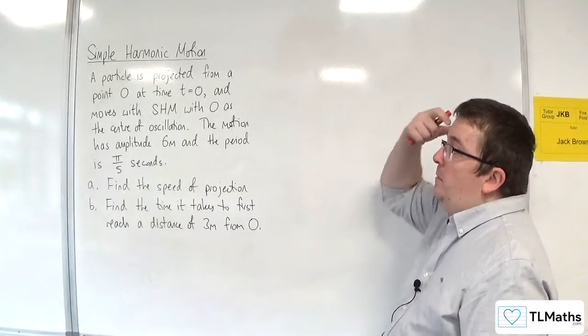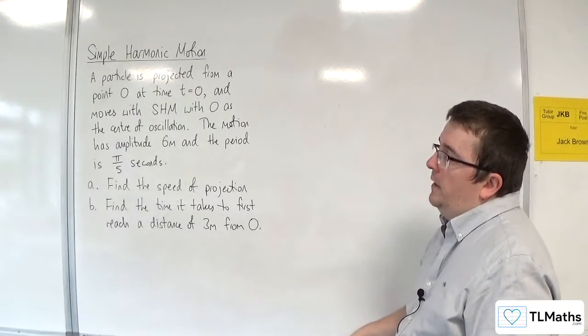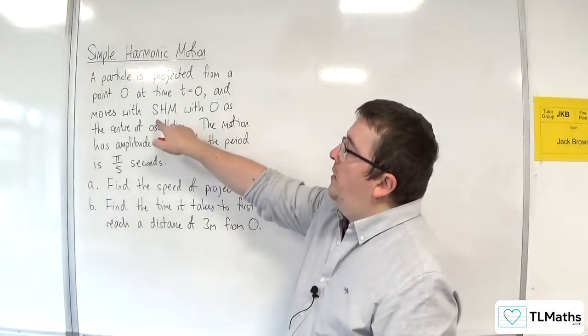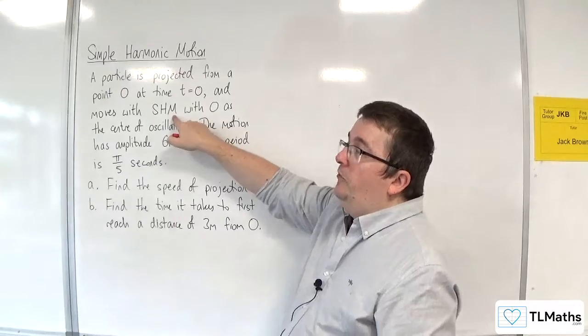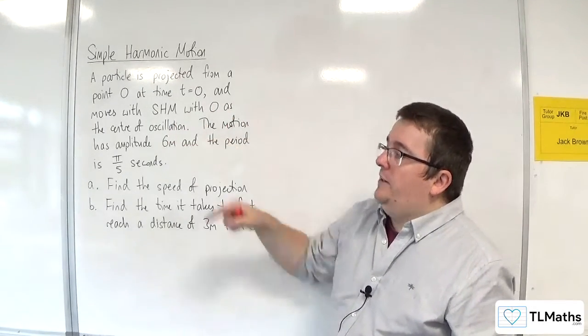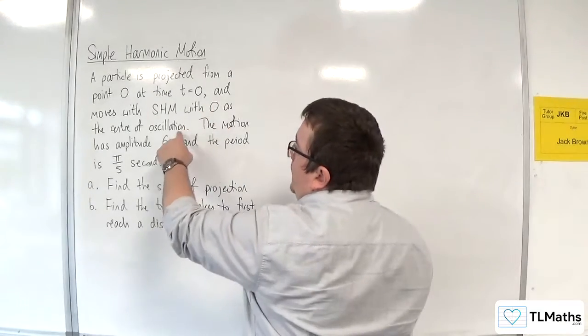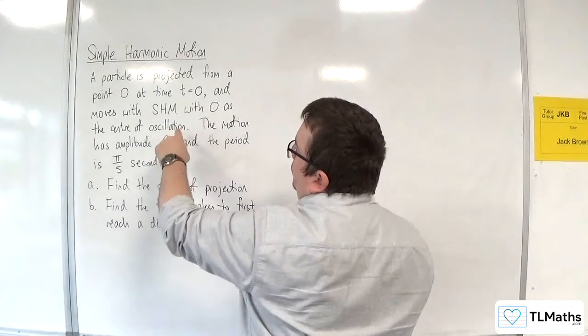So we've got a particle being projected from a point O at time t equals 0, and it moves with simple harmonic motion, sometimes abbreviated to SHM, with O as the centre of oscillation.